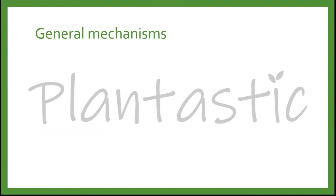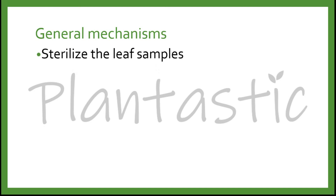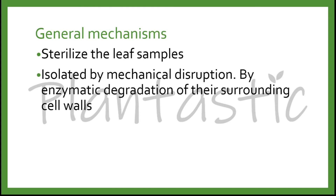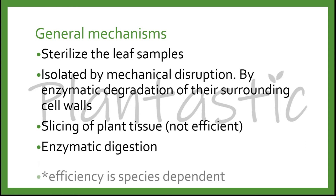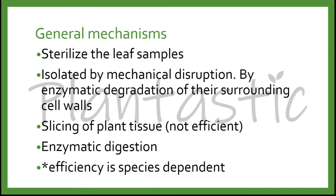The general mechanisms are as follows. First, we have to sterilize the leaf samples and isolate them with mechanical disruptions, or they can be isolated by enzymatic degradation of their surrounding cell walls. The example of mechanical disruption is slicing of the plant tissue, which is not efficient. Therefore, enzymatic digestion is always used to digest and degrade the cell wall, whereby the efficiency of the mechanism is species-dependent.